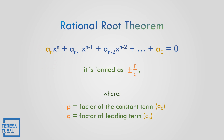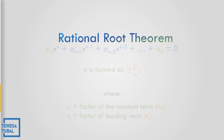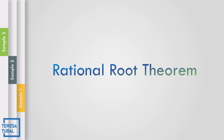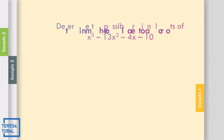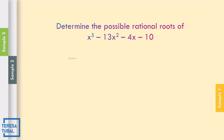So, let us apply and identify the Rational Root Theorem. Example number 1: Determine the possible rational roots of x to the 5th minus 13x squared minus 4x minus 10.